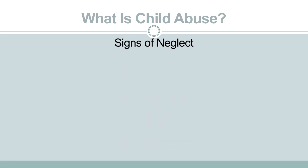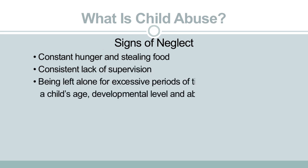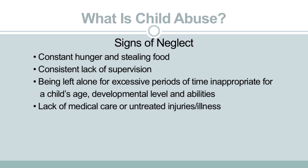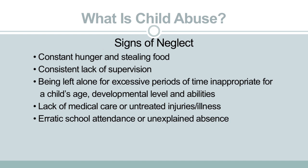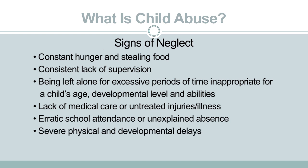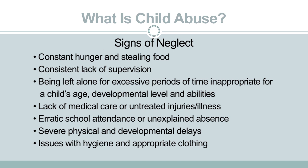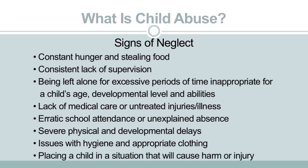When identifying neglect, signs can include constant hunger and stealing food, a consistent lack of supervision, being left alone for excessive periods of time inappropriate for a child's age, developmental level, and abilities, a lack of medical care or untreated injuries or illness, erratic school attendance or unexplained absences, severe physical and developmental delays, issues with hygiene and appropriate clothing especially seasonally, and placing a child in a situation that will cause harm or injury. Often neglect is the result of a lack of resources, education, or other issues such as mental health problems. Regardless of the reason, if a child is at risk due to neglect, it must still be reported to the appropriate authorities.